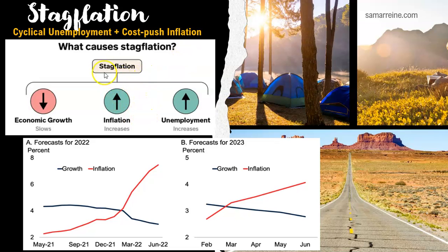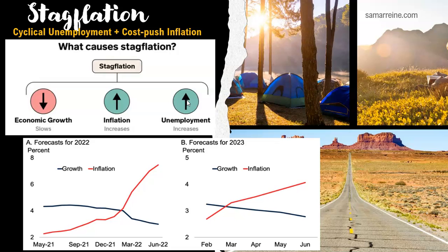Looking at the stagflation diagram: economic growth is down, while inflation and unemployment are both up. This is not a good picture — the economy is going weaker and yet facing more heat from inflation and more pressure from unemployment. This is unusual because normally when the economy slows, unemployment goes up, fewer dollars chase goods, and inflation drops. When economic growth drops, inflation usually follows. In stagflation, the opposite is happening.